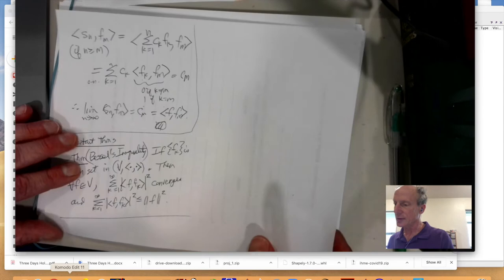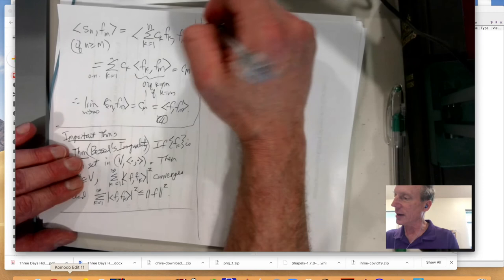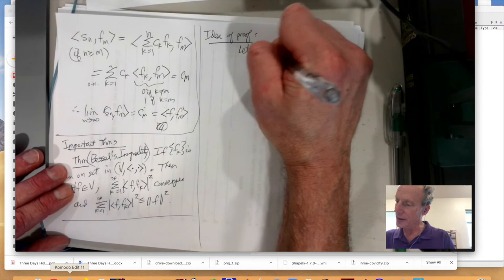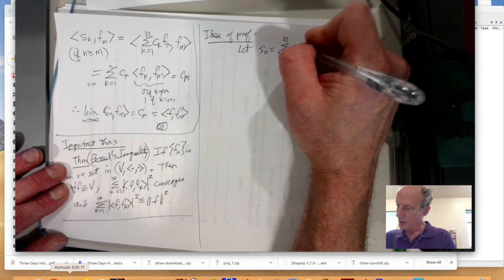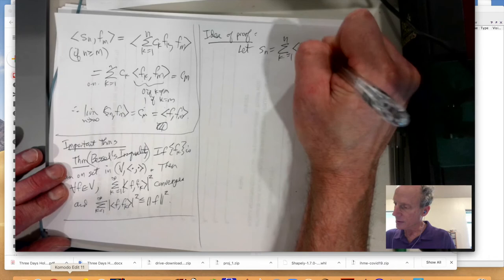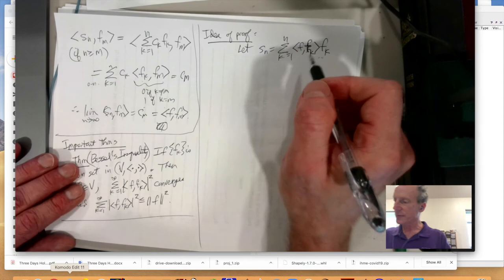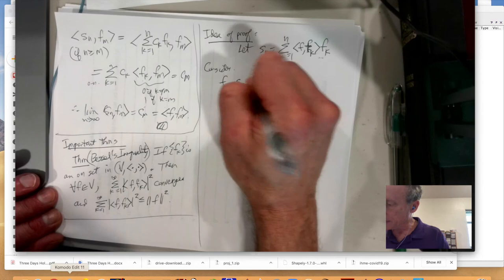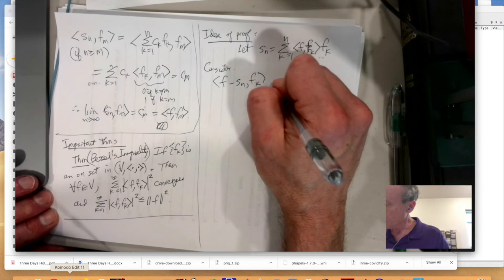So, that's pretty cool. Well, so, what's the idea of proof? Well, I'm going to let, again, let SN be the nth partial sum. So, K equals 1 to n of the coefficient times the orthonormal basis element. And, let's look at F minus SN, in a product with FK. Well, all right.